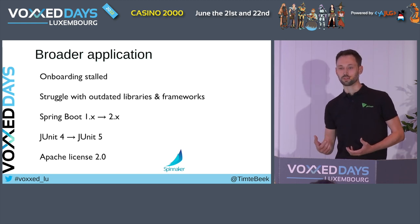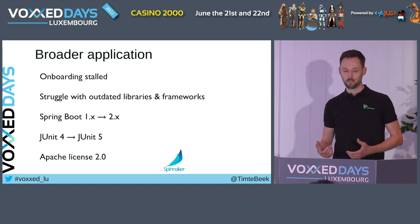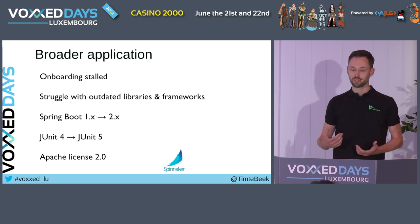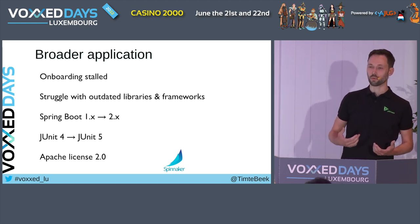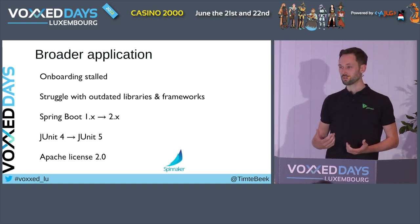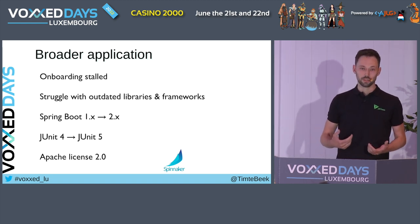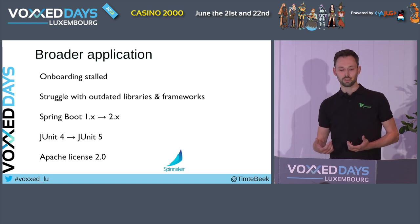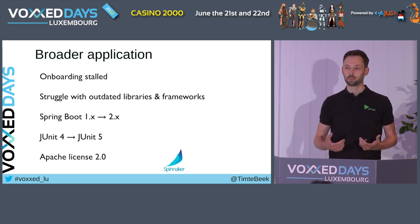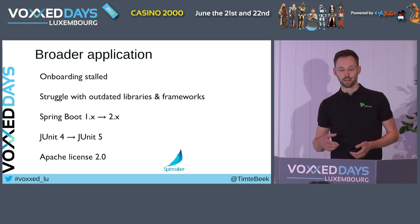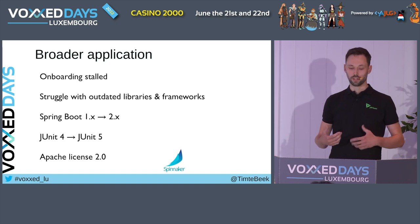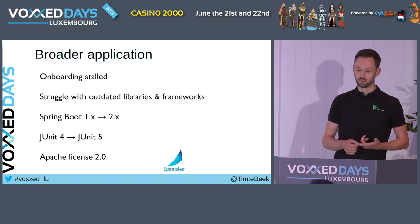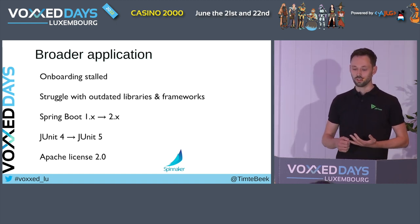Later, the same developers moved on to work on Spinnaker. And while trying to onboard teams and organizations there, they found teams often struggled with the same outdated libraries and frameworks. To help these teams adopt the latest versions, they applied a different set of transformations through the same abstract syntax tree parser. This allowed them to quickly reduce technical debt, bringing teams from Spring Boot 1 to 2 and from JUnit 4 to JUnit 5.